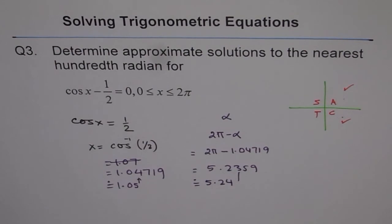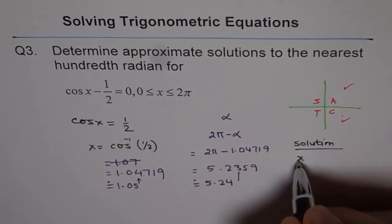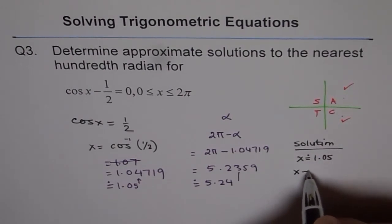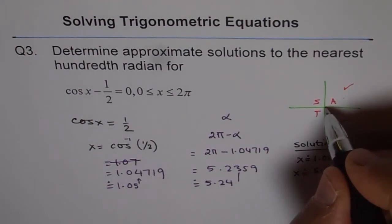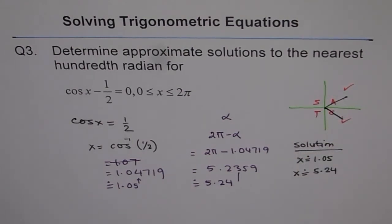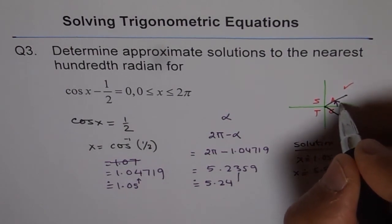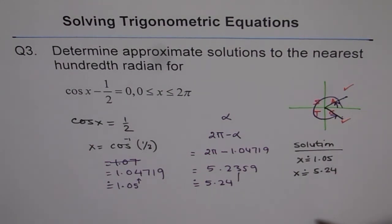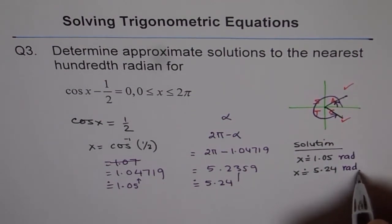So these are the two solutions for our equation. The principal angles are: the first solution is 1.05 radians and the second solution is 5.24 radians. When we do not write any units, radians is understood, but since we are just beginning with this, it is good to write radians explicitly.